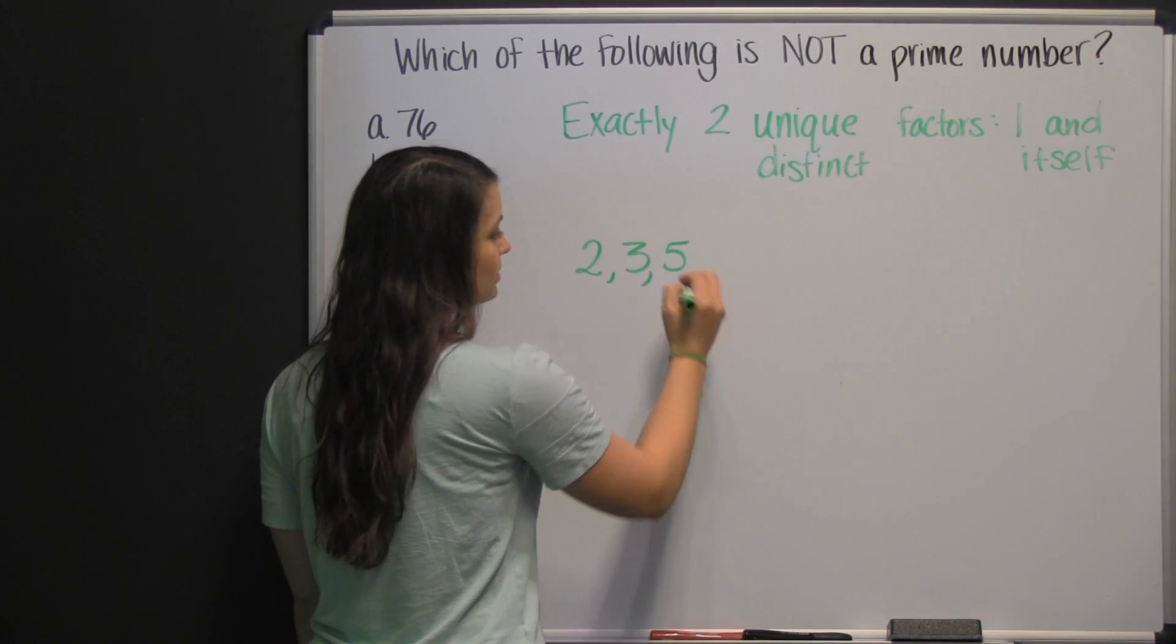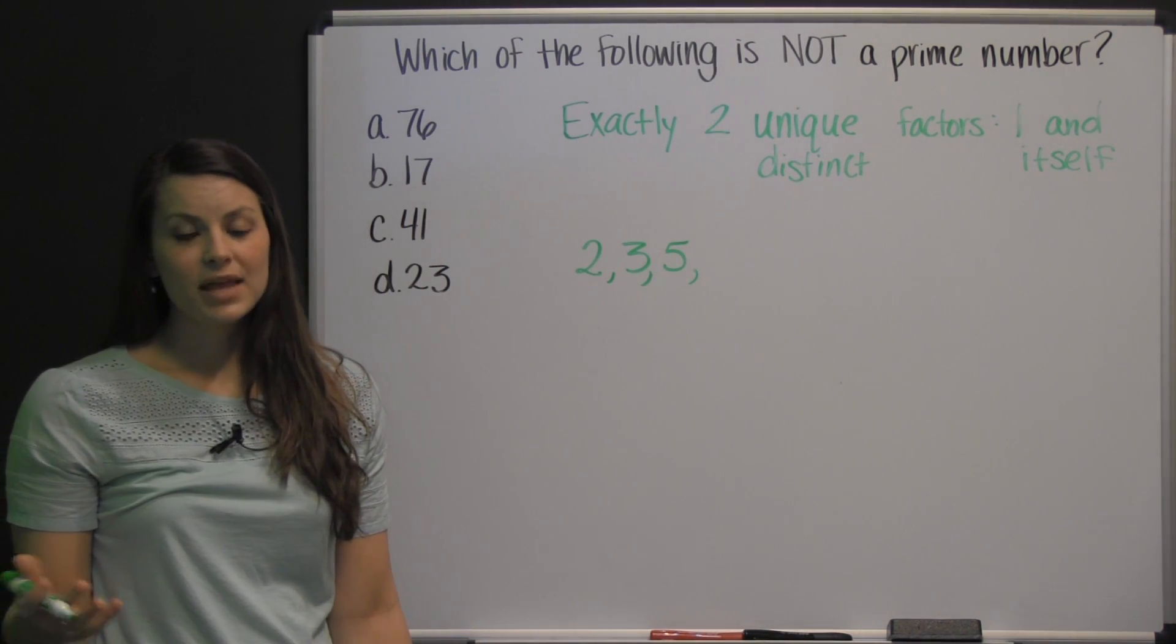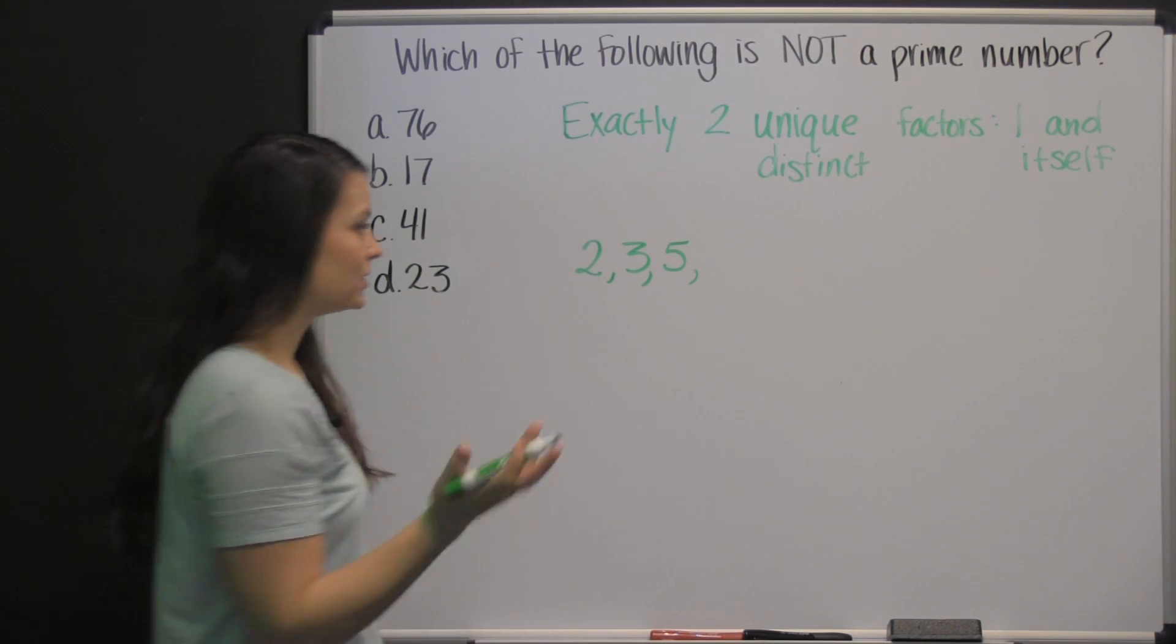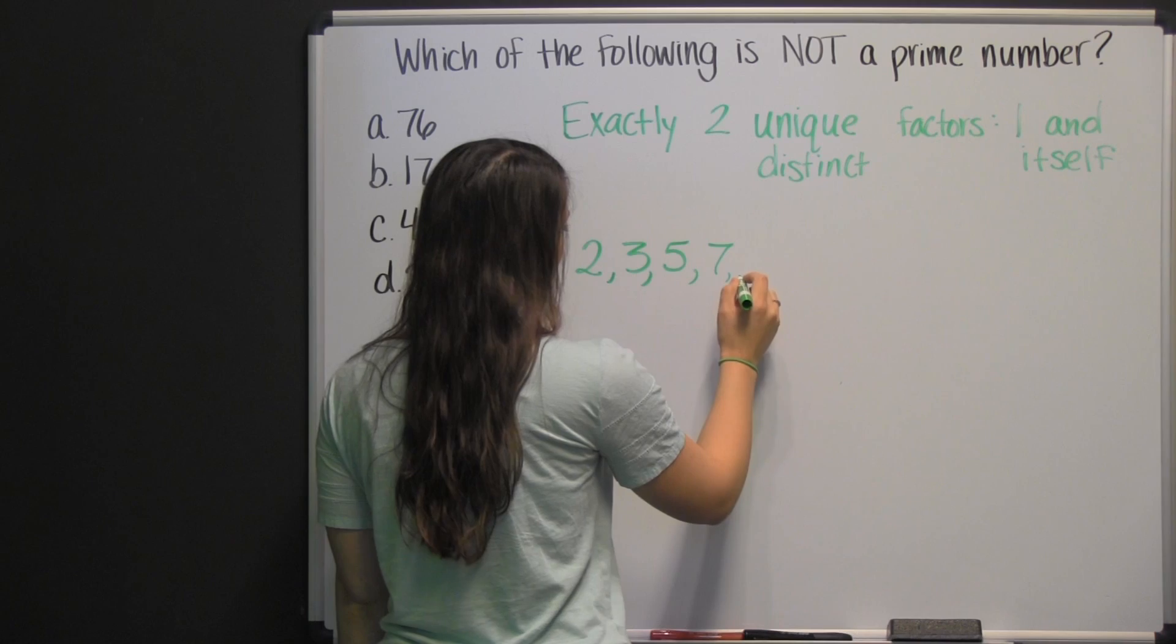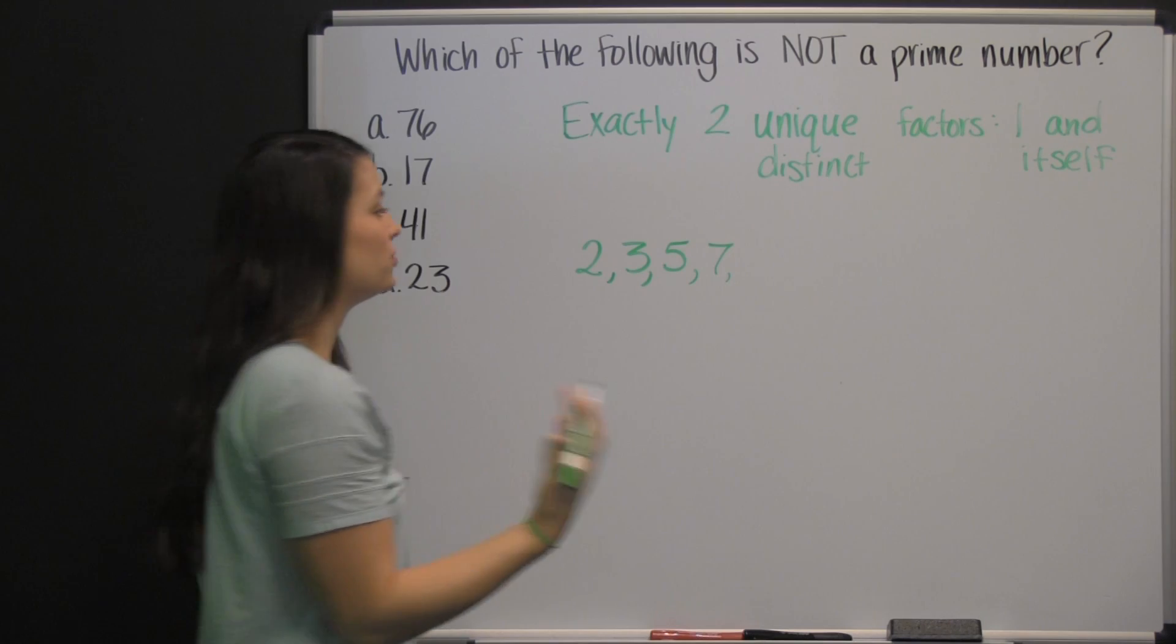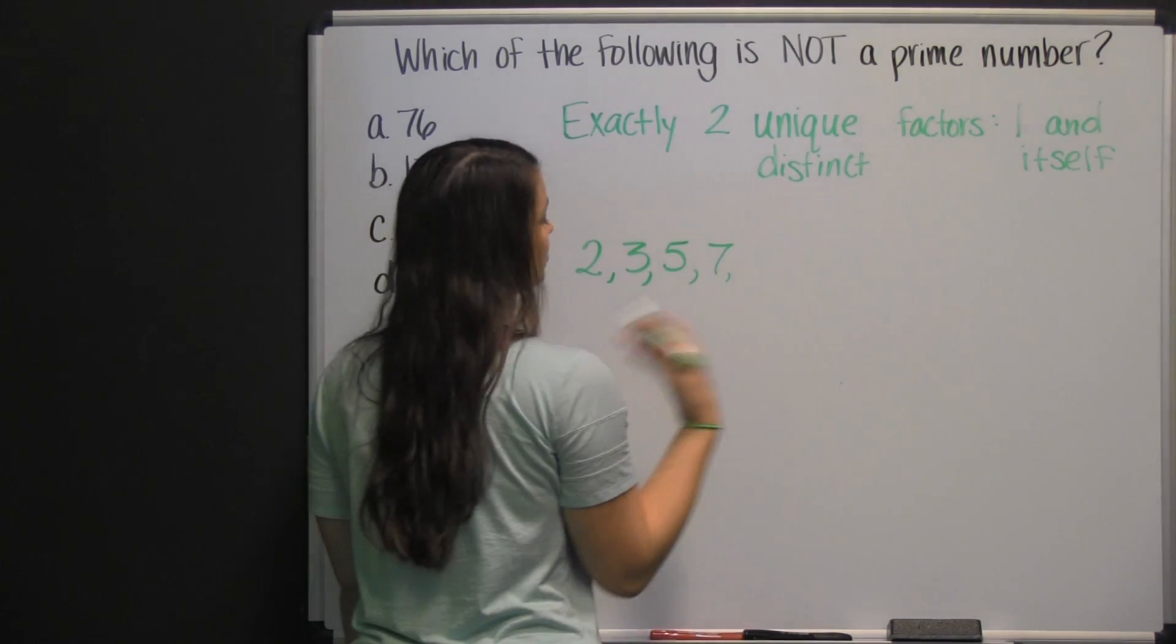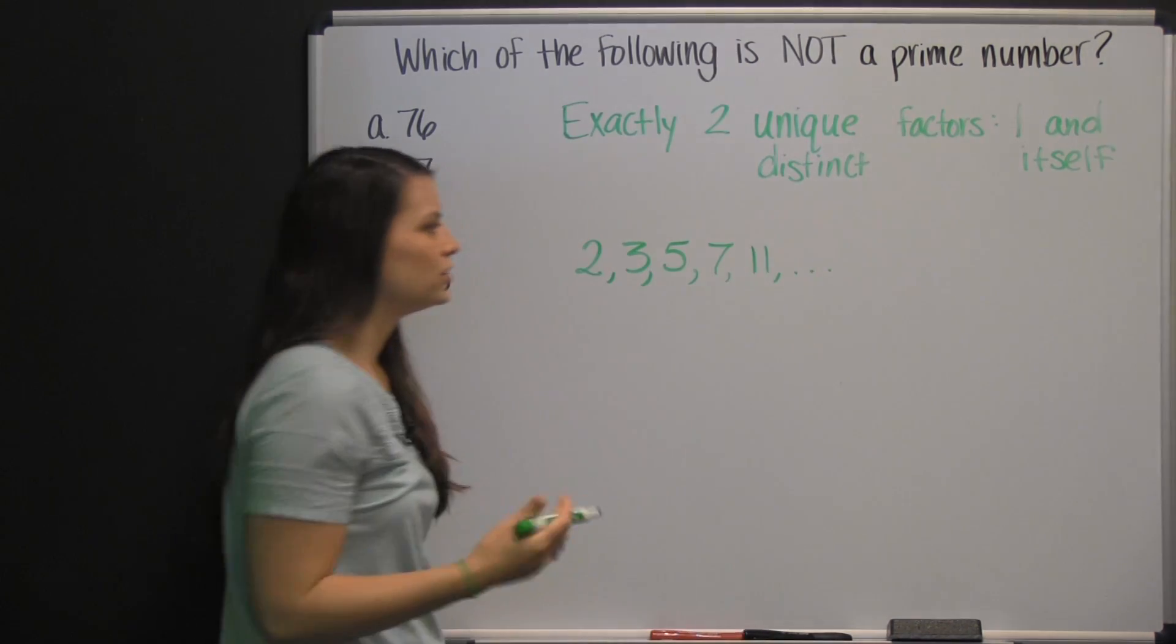There's five. One times five is five. Those are the only factors. Six again has more than two factors. One times six is six, but also two times three. So we skip six. Seven. One times seven is seven. Eight again has more than two factors. Besides one times eight, there's also two times four. So we skip eight. Nine also has more than two factors. Ten does as well. Eleven would be next. So on and so forth.